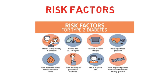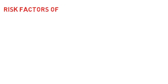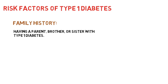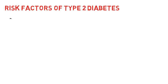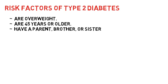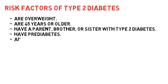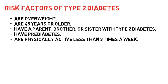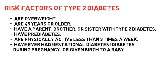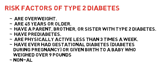Now let's look at who is at risk of diabetes mellitus. You are at risk of type 1 diabetes if you have a family history — like having a brother, sister, or parent with type 1 diabetes. Risk factors for type 2 diabetes include: overweight, age above 45 years, family history, pre-diabetes, ever having had gestational diabetes or giving birth to a baby weighing 9 pounds, or non-alcoholic fatty liver disease.